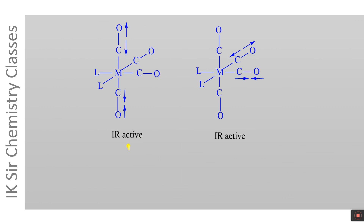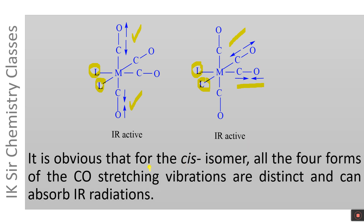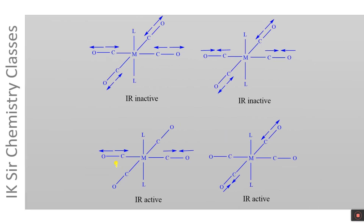The other two vibrations for the cis isomer are given here. In the third mode, this carbonyl group is compressed while this carbonyl group is stretched. Similarly, in the fourth mode of vibration, this C–O bond is compressed while this C–O bond is stretched. Thus, all four possible modes of vibration for the cis isomer of ML₂(CO)₄ are IR active, producing four absorption bands in the IR spectrum.